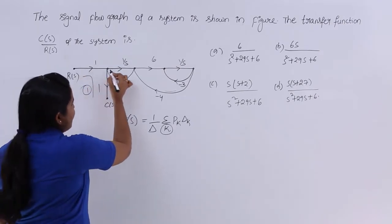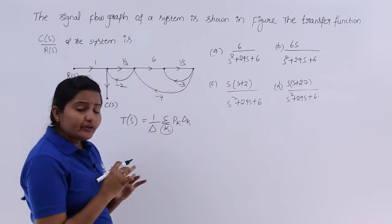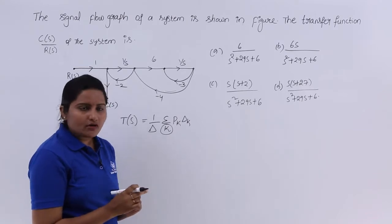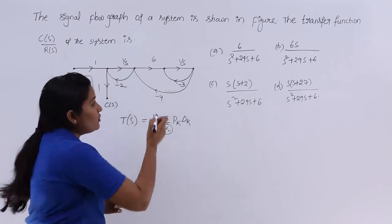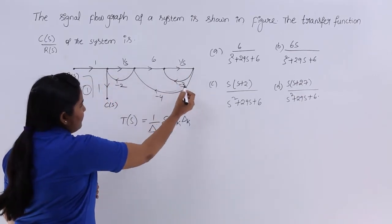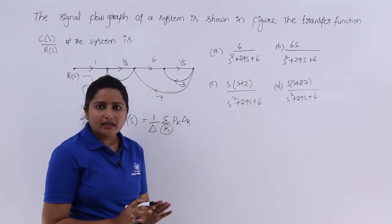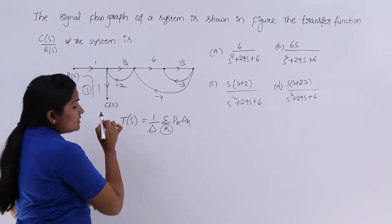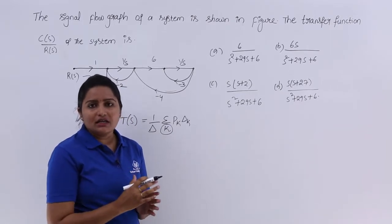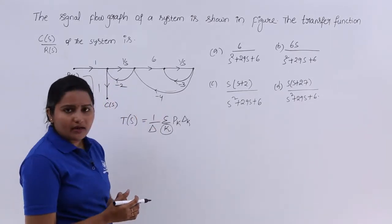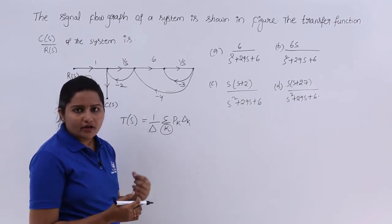If you consider another path, we can't take that as a forward path. Why? Because at node number 2 you are touching twice in that path — by travelling one way you touch this node, and by travelling another way you touch it again. So we can't consider that as a forward path. Only the shortest path is considered as the forward path, and we are having only one forward path.